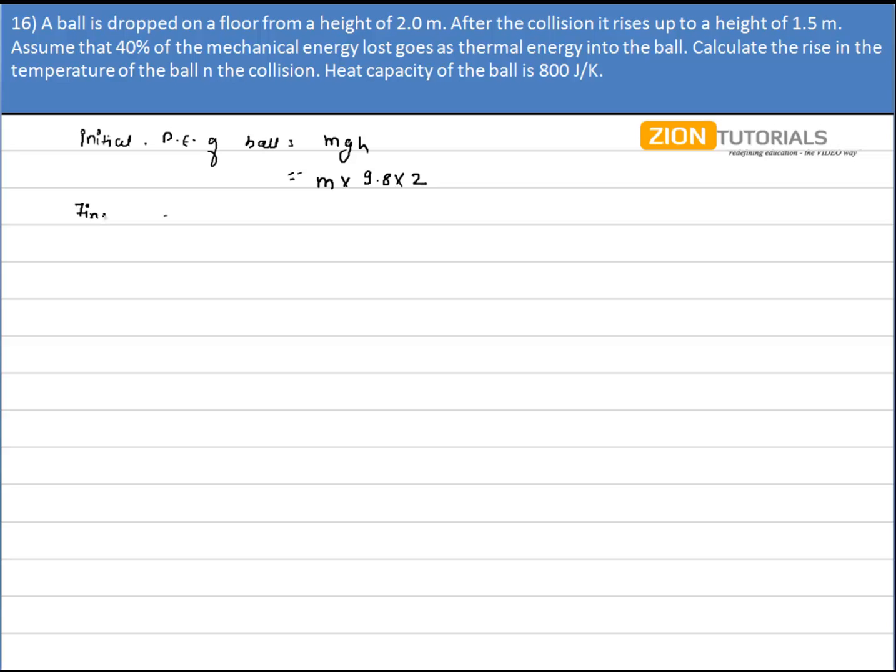After the collision it rises back to a height of 1.5 m. So the final potential energy of the ball will be M times 9.8 times 1.5.